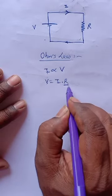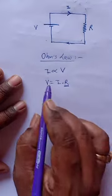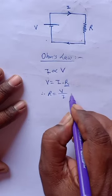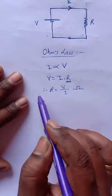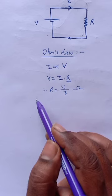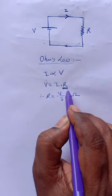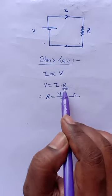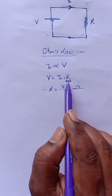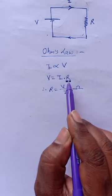R is known as the proportionality constant, and this R is nothing but the resistance of the circuit, given by R equal to V by I. The unit of resistance is ohm. This is Ohm's law: the current flowing through the circuit is directly proportional to the applied voltage. R is considered a constant — there is no change in R.